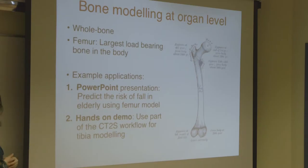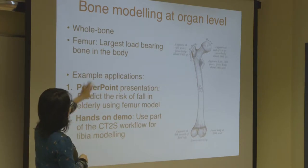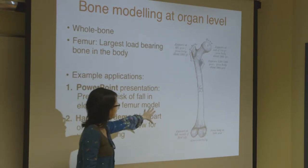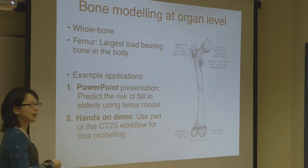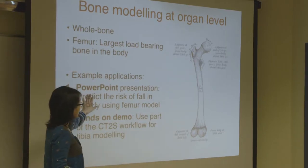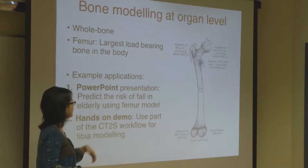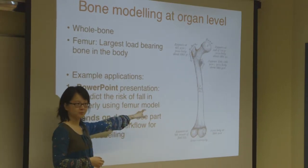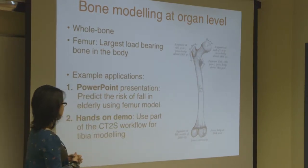This is the thinking about bone modelling at organ level — we're talking about a whole bone, and in this case the femur. This is the main target for the CT2 strength workflow. All the examples in the slides will be using the femur model, and I'll show you how we predict the risk of falling in our elderly patients.